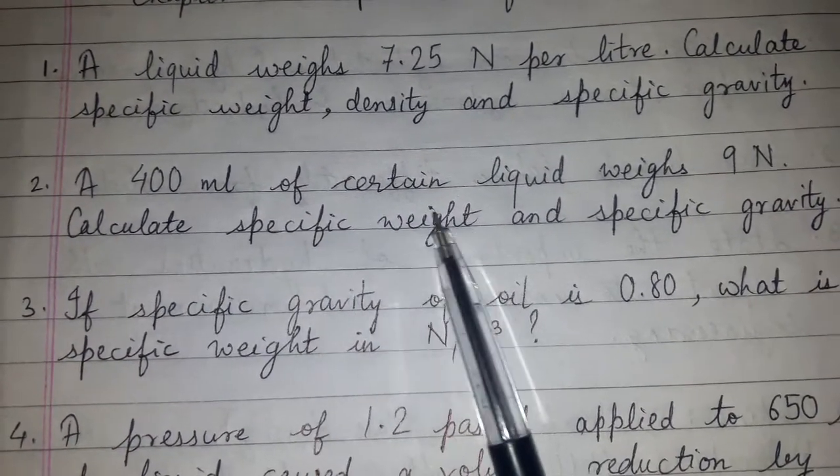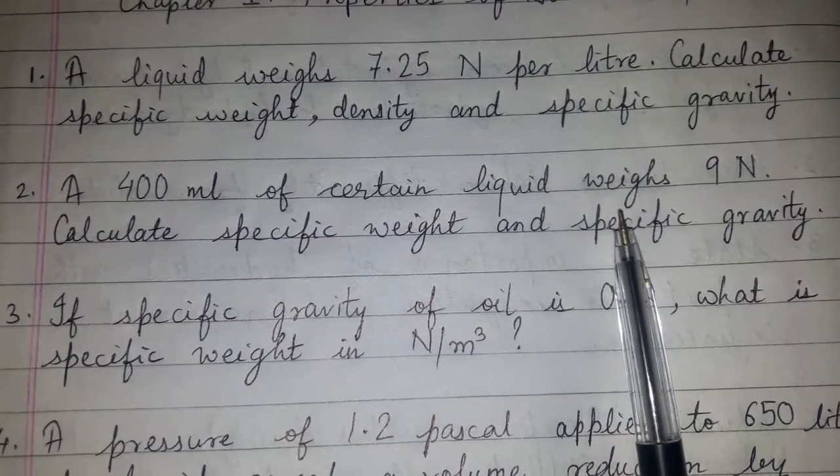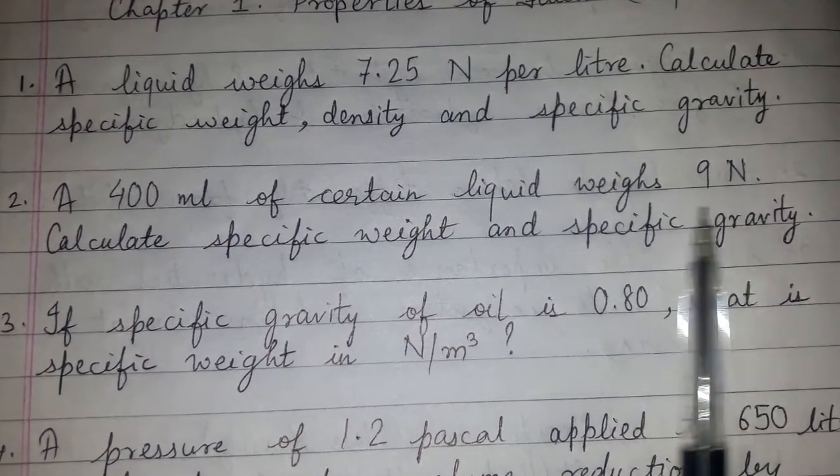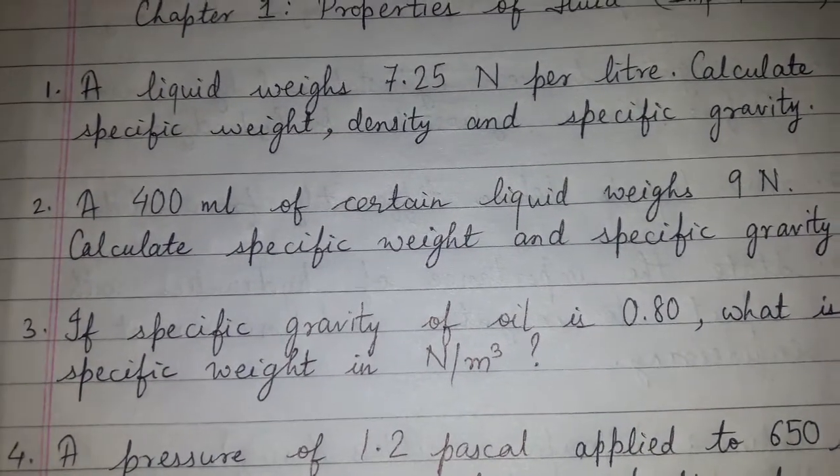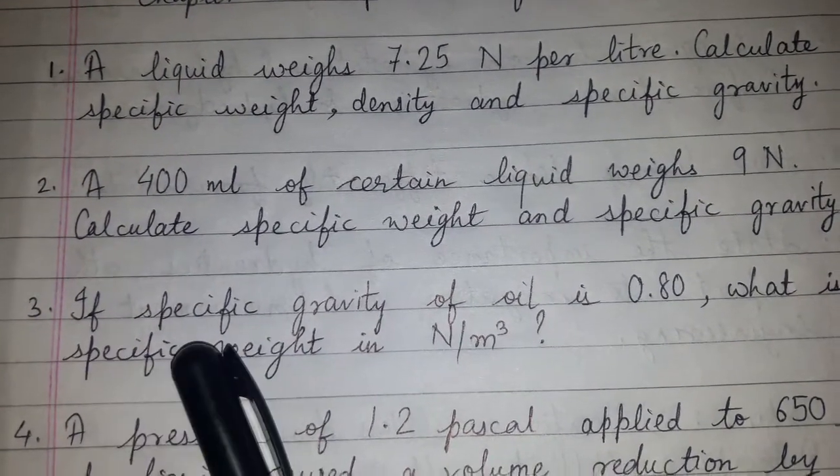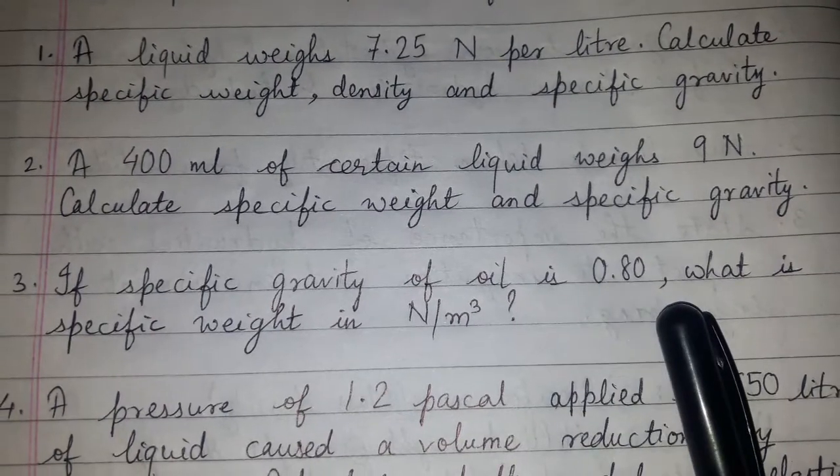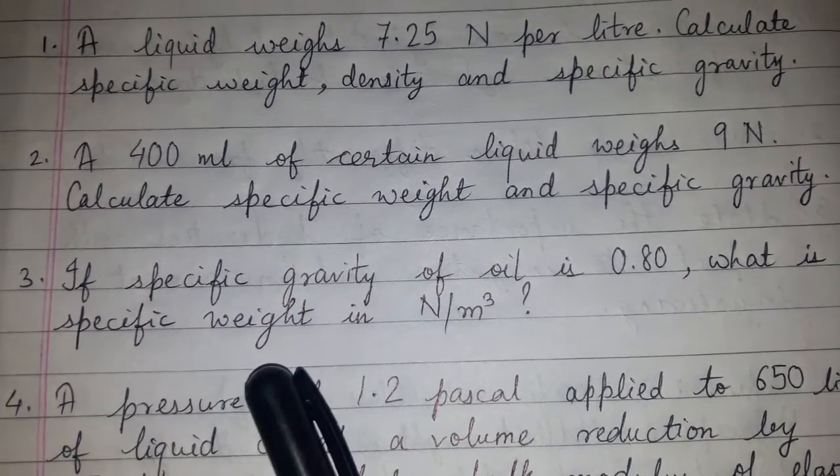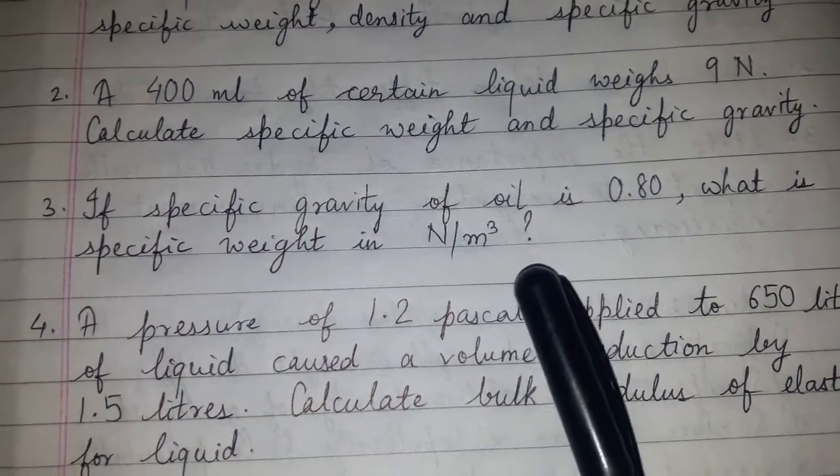A 400 ml of certain liquid weighs 9 N. Calculate specific weight and specific gravity. If specific gravity of oil is 0.80, what is specific weight in N per m³?